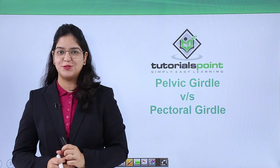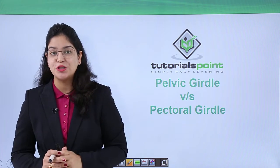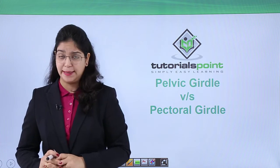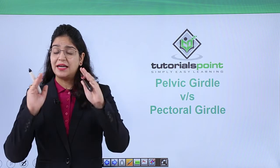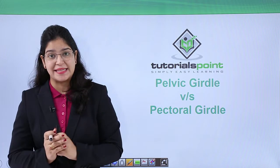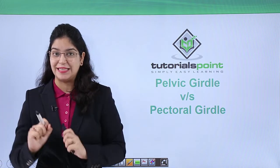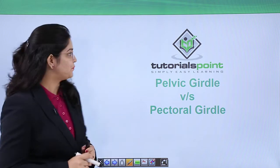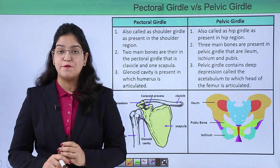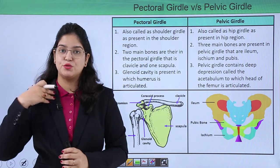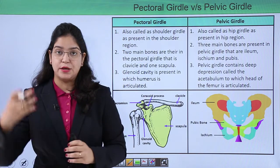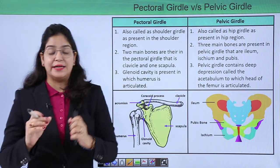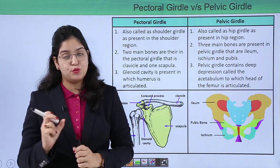Welcome back to Tutorials Point. Today we are going to learn about the difference between the pectoral girdle and the pelvic girdle. A girdle is the connection or bone which connects our appendicular skeleton to the axial skeleton. The pectoral girdle connects our arm to the axial skeleton through the shoulder region, and the pelvic girdle connects our lower limb — the leg — to the hip region.